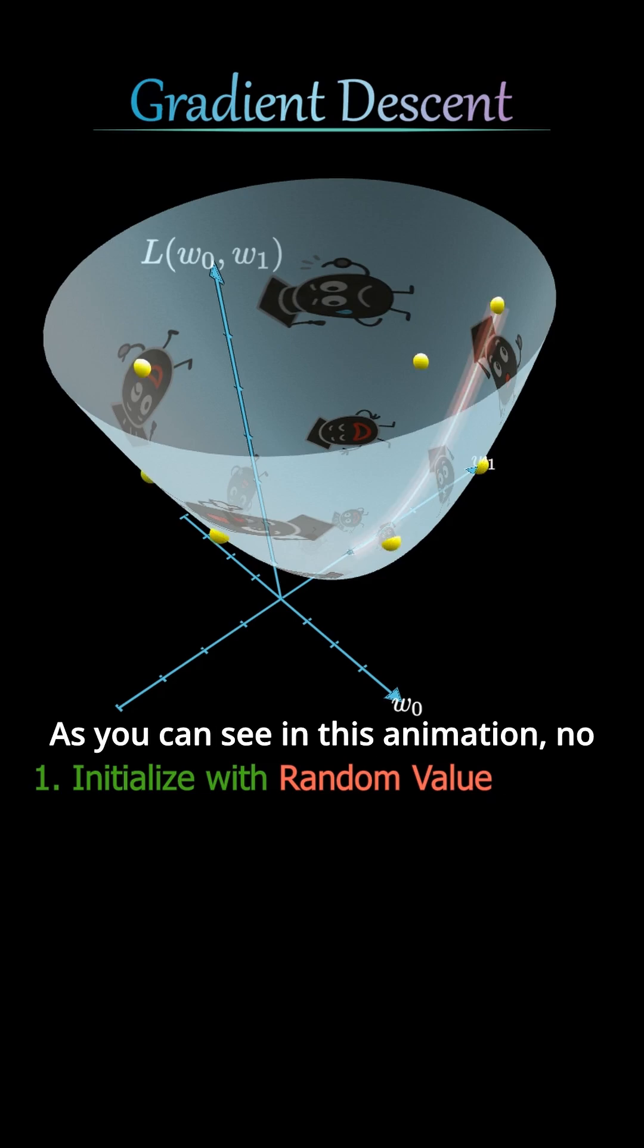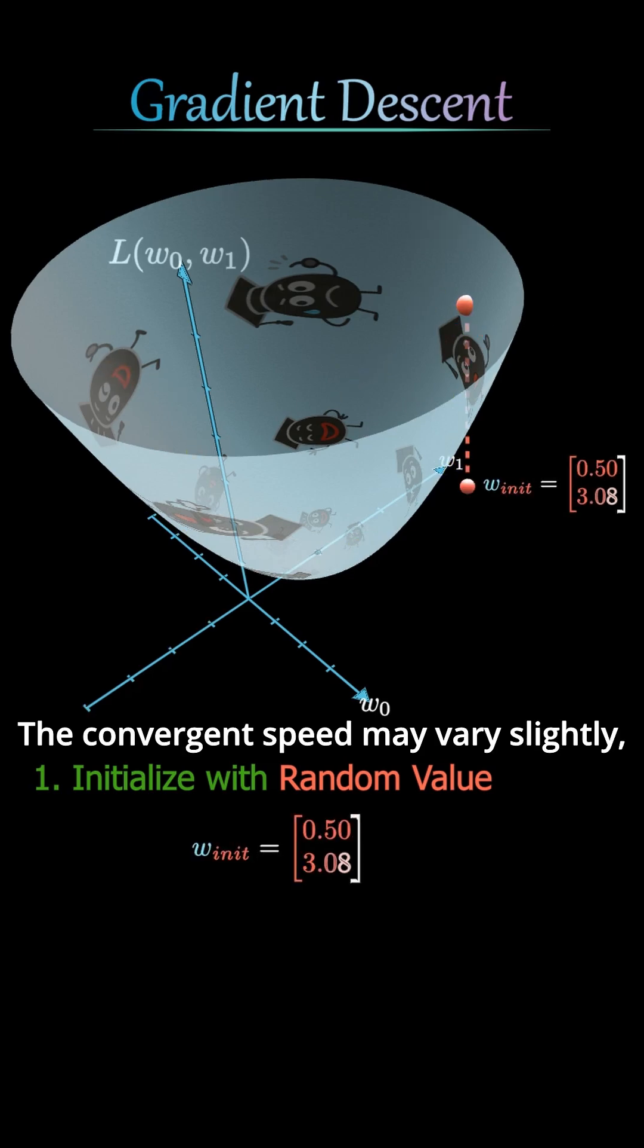As you can see in this animation, no matter where we start, we will always converge to the same optimal solution. The convergence speed may vary slightly, but any starting point is fine.